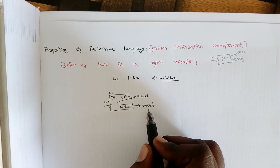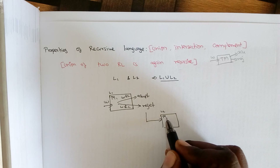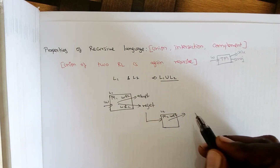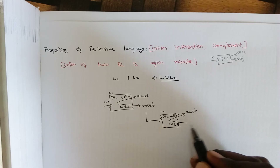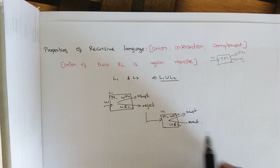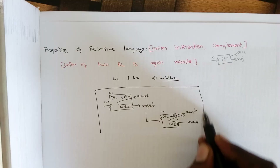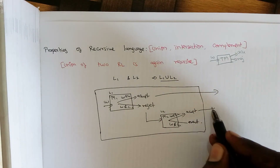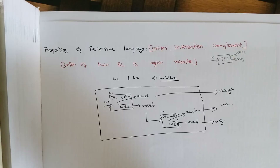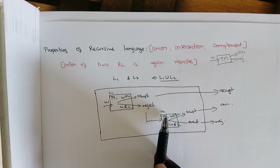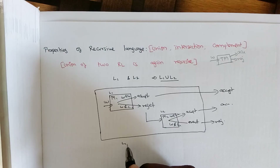If the input is rejected by machine M1, we check whether it is accepted by L2. For L2 we construct machine M2. The input is rejected only if it is rejected by both M1 and M2. Overall, we construct a combined machine that accepts the input if it is accepted by either M1 or M2, and rejects the input if it is rejected by both machines.